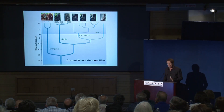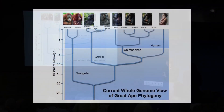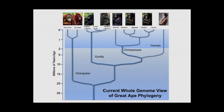I wanted to take one step back and show how humans fit into the larger picture of primate phylogeny. This is a phylogenetic tree based on the latest whole genome sequence data, and you can see that humans form one branch most closely related to chimpanzees.